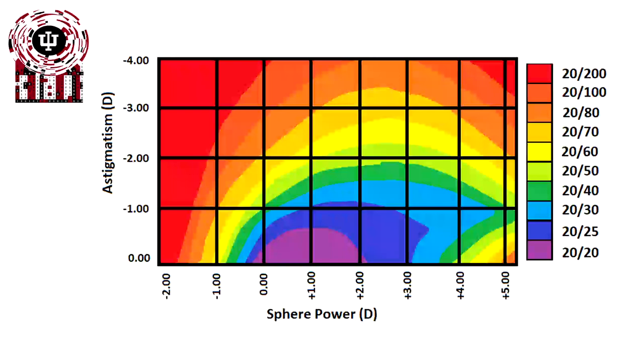In this situation, hot colors or redder colors have more reduced acuities, while colder colors or cooler colors like blue have better acuities. Just like before, we have the sphere powers along the horizontal axis from minus two to plus five, and on the vertical axis we have astigmatism from zero to four diopters. What this shows is with different combinations of sphere and astigmatism power what the acuity is.